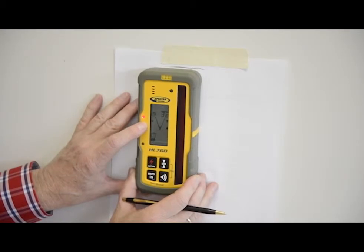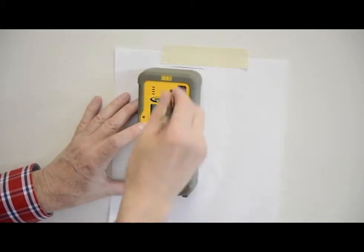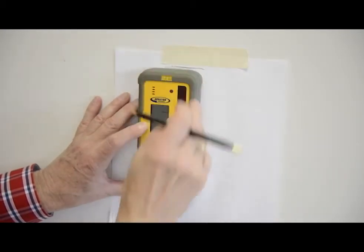Rotate the laser 180 degrees minus Y axis toward the wall and allow it to re-level. Raise or lower the receiver until you get an on-grade reading for the minus Y axis and make a second mark on the wall.